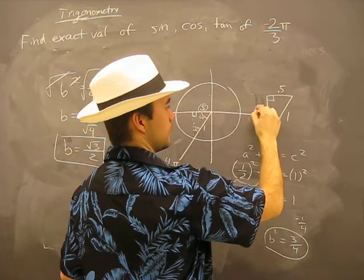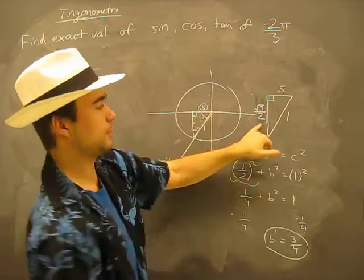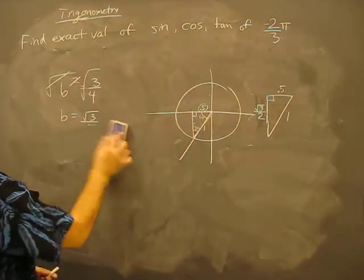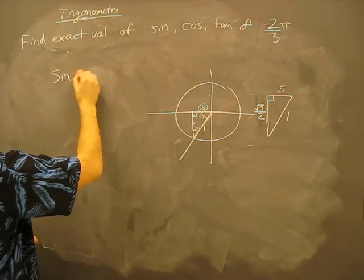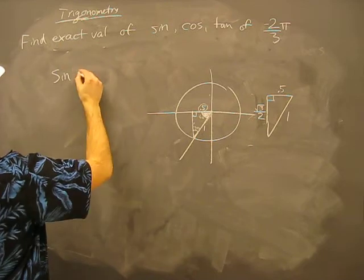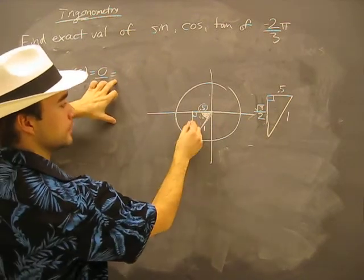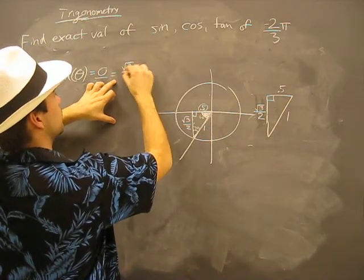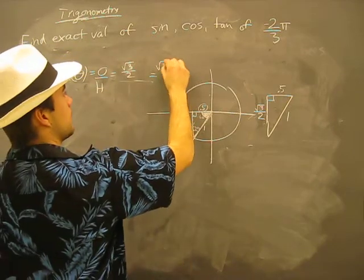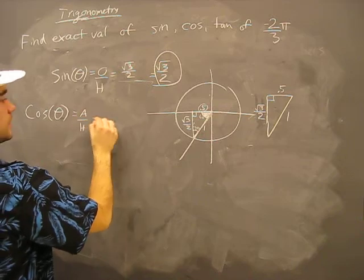So by going negative two-thirds pi radians we've developed this triangle, and now we know all three sides. We can make our ratios. Sine of theta equals opposite over hypotenuse, which equals root three over two divided by one — so sine of theta is root three over two. Cosine of theta is adjacent over hypotenuse, which is 0.5 over 1 — that's simply 0.5.